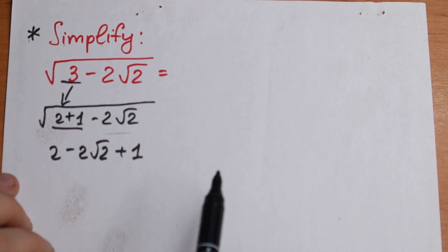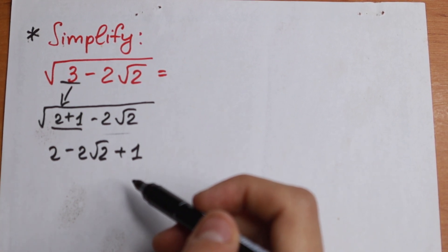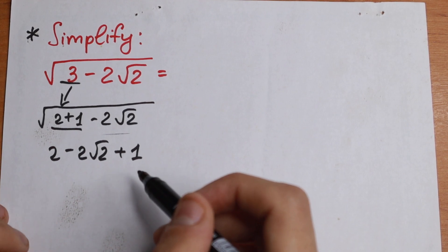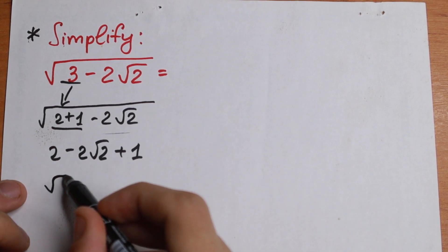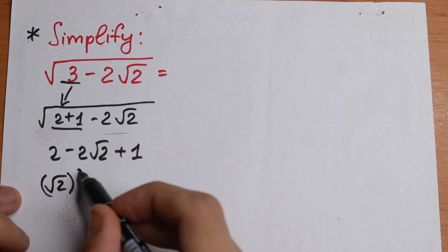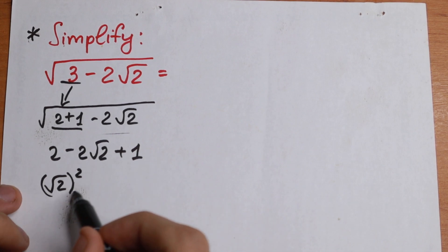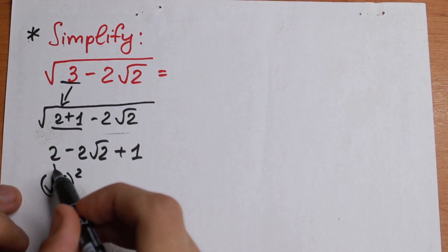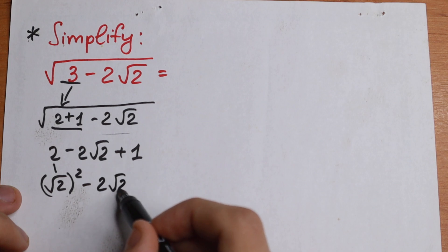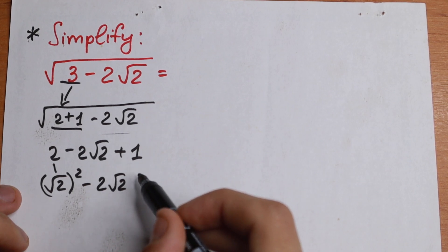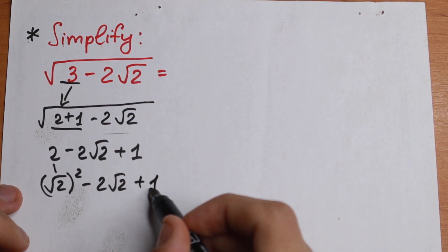Now take a close look. We can write this 2 as square root of 2 to the second power — that equals 2, so nothing changes. We still have minus 2 square root of 2, and we write this 1 as 1 squared. So now the expression inside the outer square root is (√2)² minus 2·√2·1 plus 1².